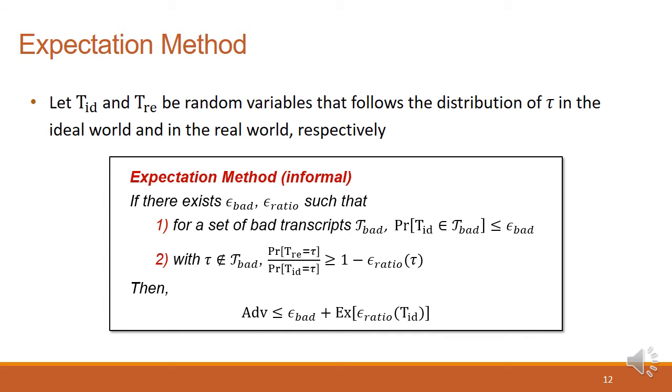And this is our main lemma, expectation method. Expectation method informally says if the probability to have bad transcript is negligible, and ideal world and the real world have a negligible indifference without getting the bad transcript, one cannot distinguish the ideal world and the real world. I will not cover this precisely, but important point is we should define the proper set of bad transcript, then upper bound the two values, epsilon-bad and epsilon-ratio.